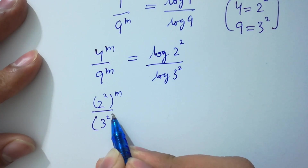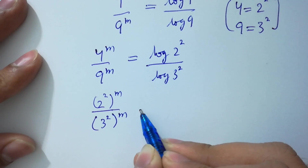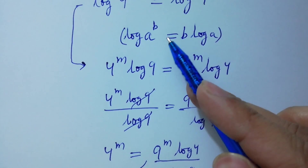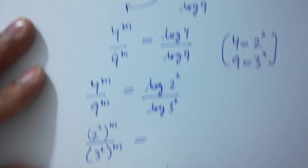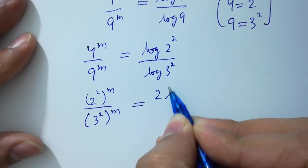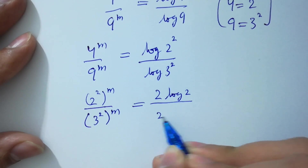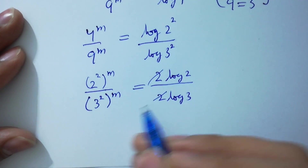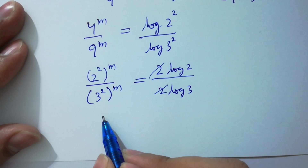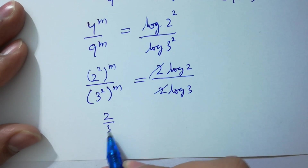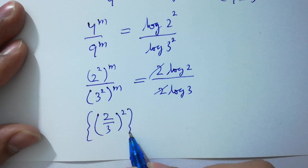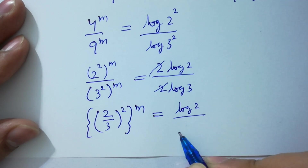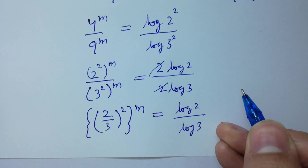Here 3 squared to the power m as it is. Applying log a to the power b equal to b log a, we have 2 log 2 over 2 log 3. Here 2 and 2 will be cancelled, and next it can be written as 2 over 3 squared to the whole power m equal to log 2 over log 3.